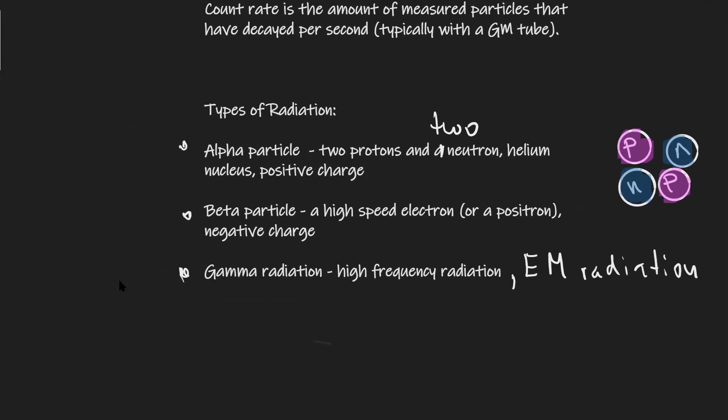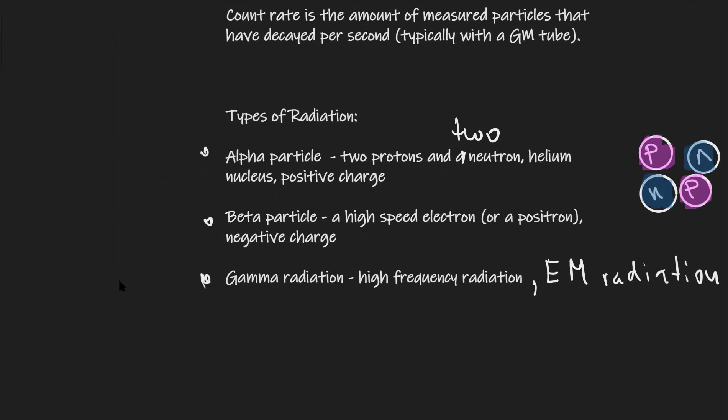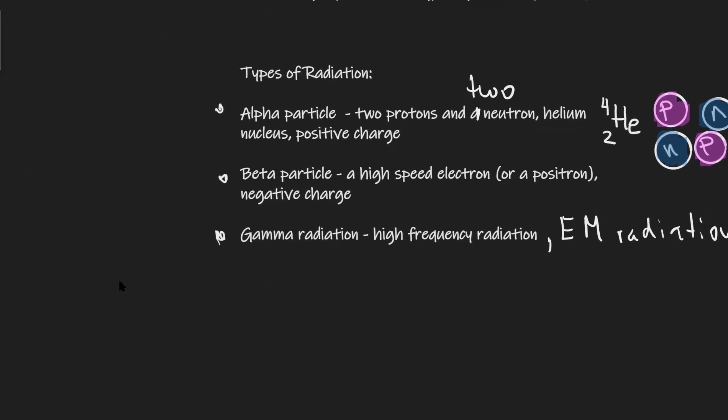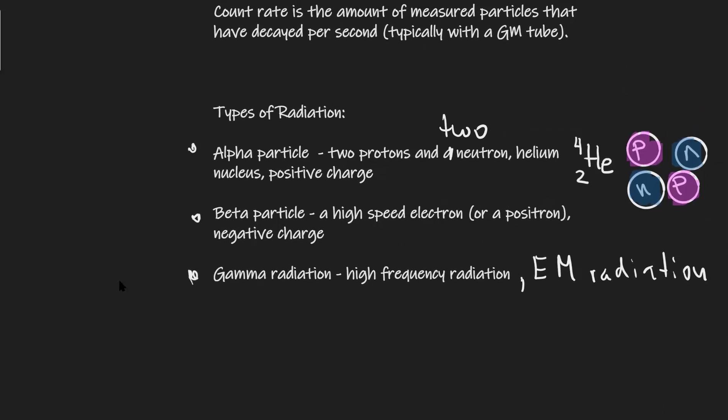So in the nuclear decay equation we can actually represent the alpha particle with the following equation. Because it's the same as a helium nucleus it can be represented by helium 4,2. Remember the two here is just the number of protons and the four here is the number of protons plus the number of neutrons. A beta particle is just an electron that has a negative charge so we're going to have a minus one here that has no protons and no neutrons. So this one here will be given as zero.